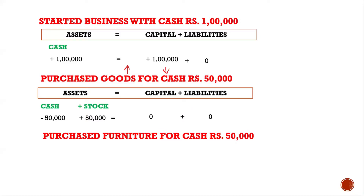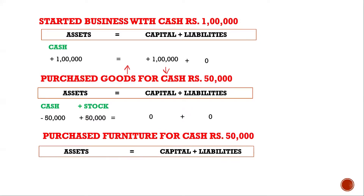The next case is purchasing furniture for cash. When furniture is being purchased, cash will fall and the asset — that is furniture — will rise without any effect on capital and liabilities of the business.